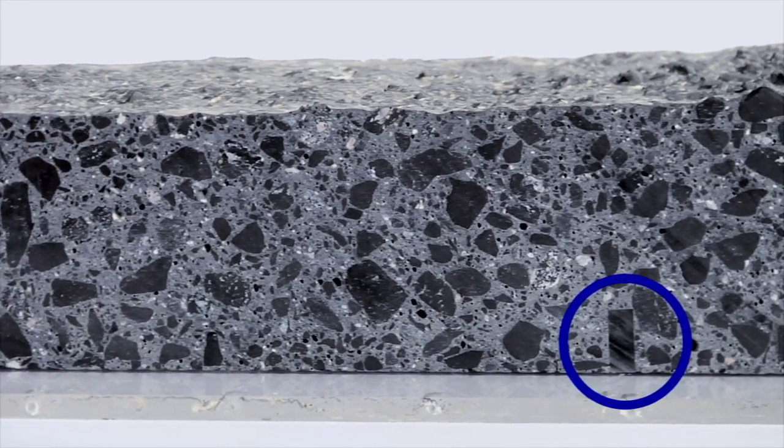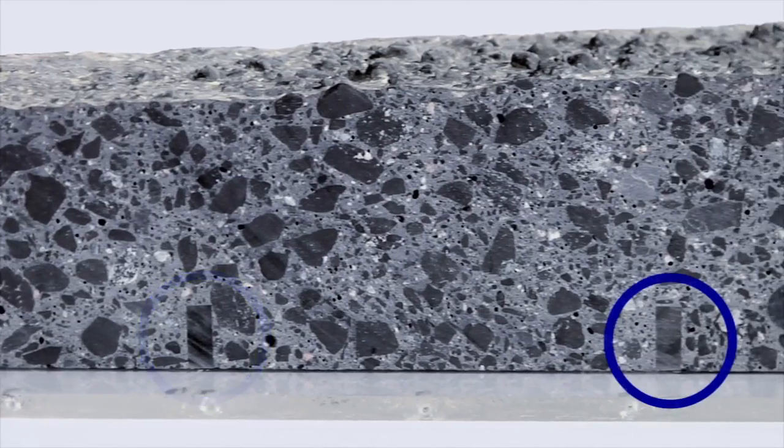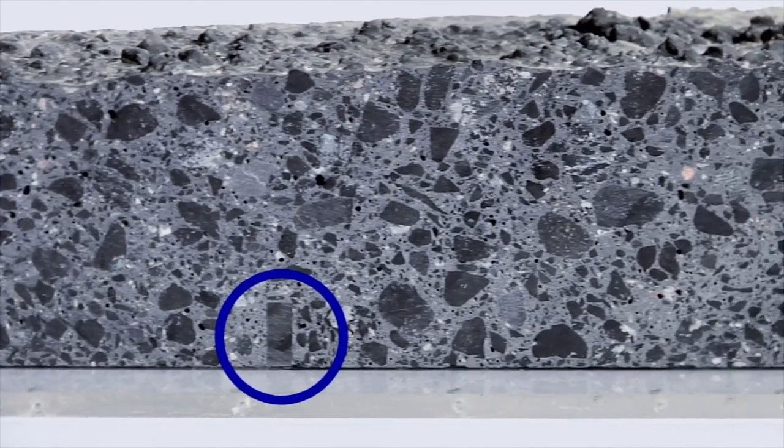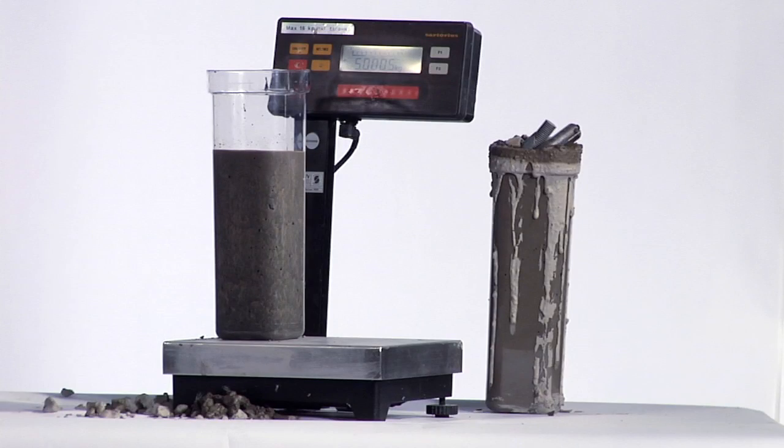There is no risk for segregation. This cross-section reveals that the larger aggregates are evenly distributed. You can easily produce high quality and, if needed, self-compacting concrete with a density up to 4,000 kg per cubic meters.